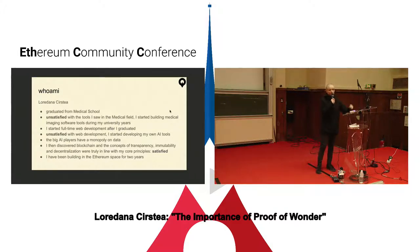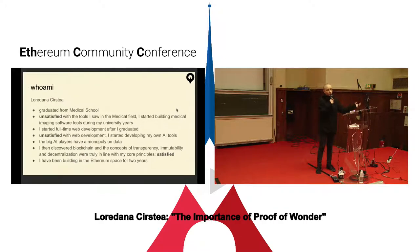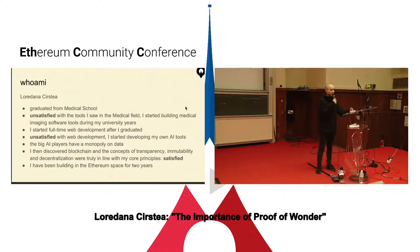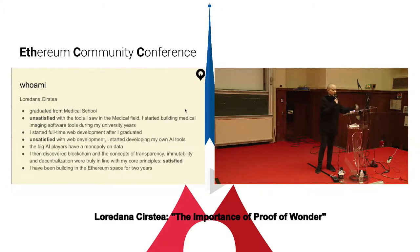At some point I was unsatisfied with web development and looked for other things. I found machine learning and AI, tried it out, took courses, and built my own tools for making it easier to build models. But I didn't like that space either, because of the monopoly on data — it wasn't as open as I would have wanted. Then I found blockchain and Ethereum, and I was really drawn by the concepts of transparency, immutability, and decentralization. They were very in line with what I wanted to do and be. So I've been building in the Ethereum space for two years.